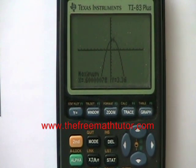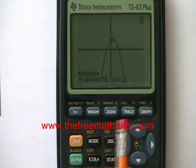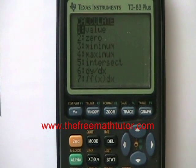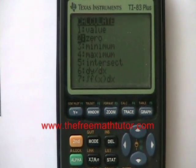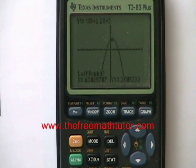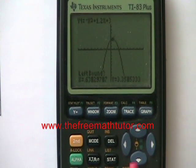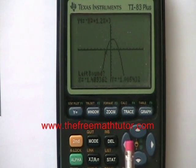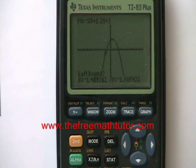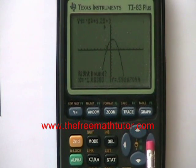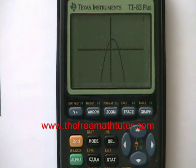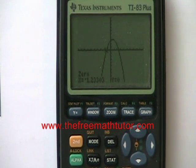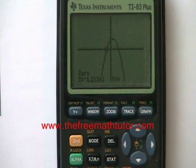Now I want to find my roots. I hit second trace again, and this time I choose number 2, 0, and hit enter. I'm going to start by finding my left root. So I move the cursor to the left of the first root on the graph and hit enter. Then move it to the right of that root, hit enter, and hit enter again. And it tells me that I have a 0 at negative 1.233.